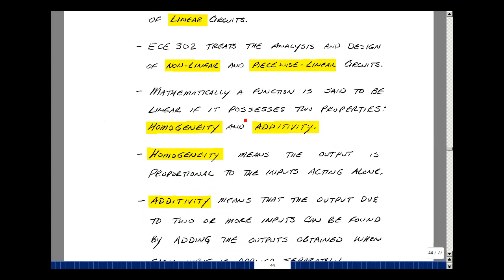Mathematically, a function is said to be linear if it possesses two properties: homogeneity and additivity. Homogeneity means that the output is proportional to the inputs acting alone, and additivity means that the output due to two or more inputs can be found by adding the outputs obtained when each input is acting separately.